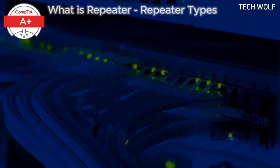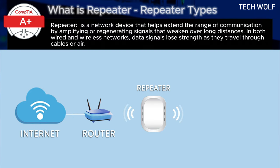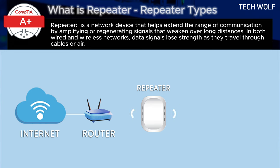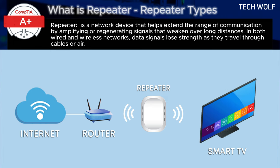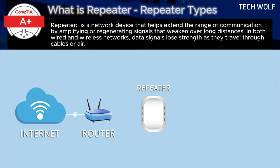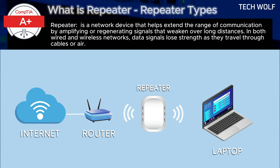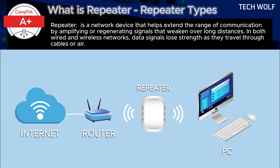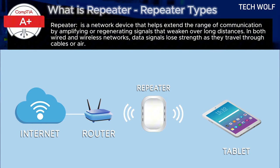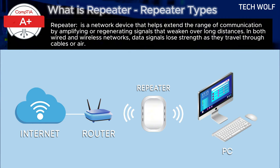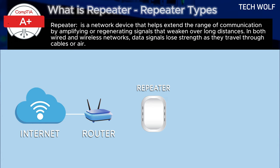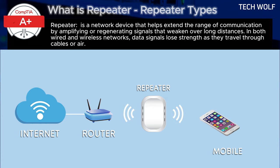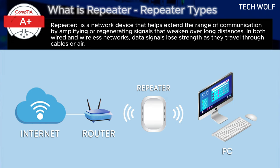What is a repeater and what repeater types are there in networking? A repeater is a network device that helps extend the range of communication by amplifying or regenerating signals that weaken over long distances. In both wired and wireless networks, data signals lose strength as they travel through cables or air. Repeaters ensure the signals can travel further without losing integrity, making them vital for maintaining strong connections over large areas or long cables.